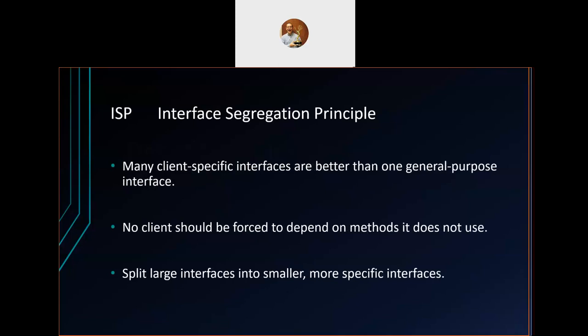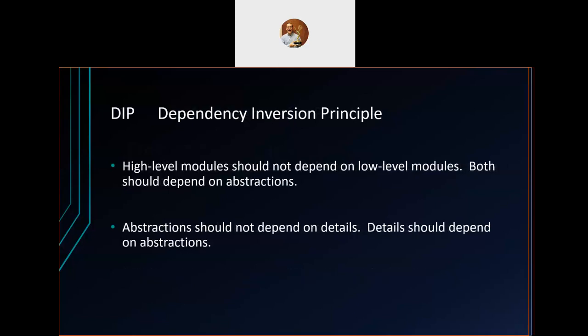Interface Segregation Principle: you shouldn't have fat interfaces; you should have small ones. If clients of a class don't use all the methods on its interface, it implies there are multiple smaller, simpler interfaces hiding in that larger one. You can fix this by splitting larger interfaces into smaller, more specific ones.